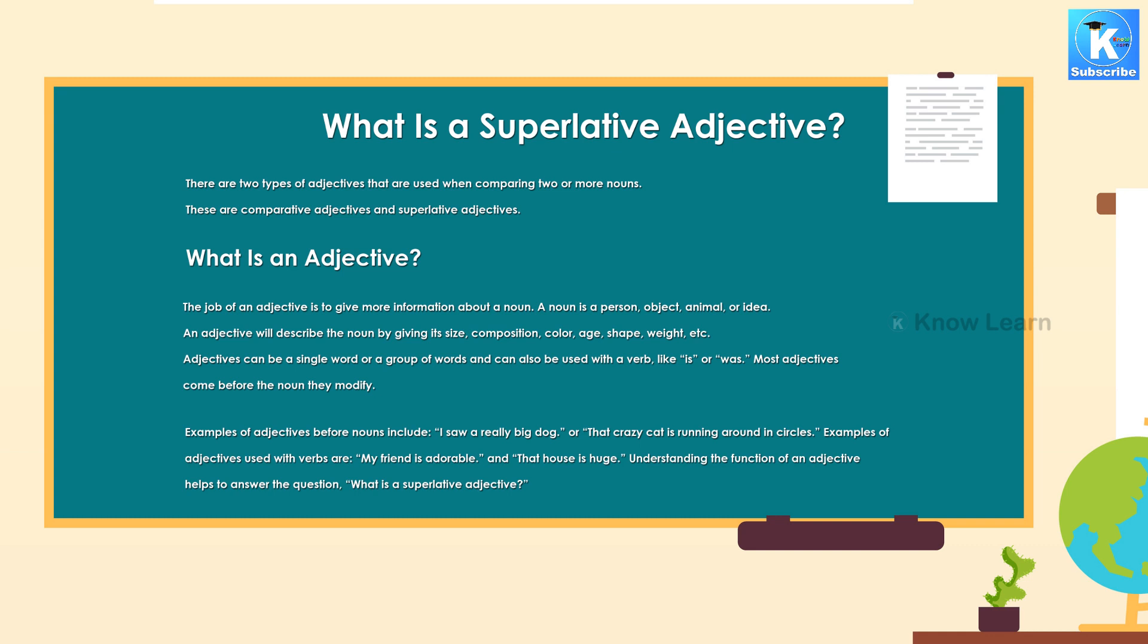An adjective will describe the noun by giving it size, composition, color, age, shape, weight, etc.